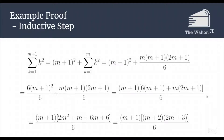Since both pieces have an m plus 1 in common, we can factor that out. So we are left with m plus 1 times 6 times m plus 1 plus m times 2m plus 1. By distributing that out and combining terms, we get m plus 1 times 2m squared plus 7m plus 6. Factoring 2m squared plus 7m plus 6 gives us m plus 2 times 2m plus 3. So the sum from k equals 1 to m plus 1 of k squared is equal to m plus 1 times m plus 2 times 2m plus 3 all over 6, which is precisely what we would get if we were to replace every n in our statement with m plus 1.